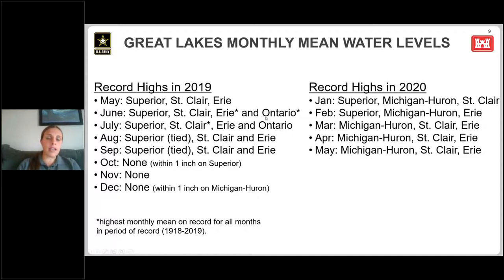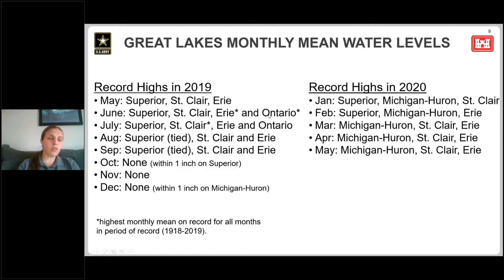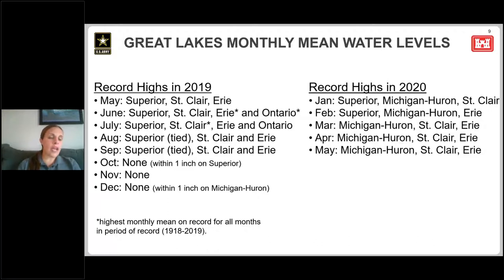Lake Ontario joined the record-breaking in June and July of last year. There are asterisks next to Lake Erie and Ontario in June and Lake St. Clair in July — not only were they the highest on record for those respective months, they're also the highest monthly mean on record for all months in our period of record dating back to 1918.